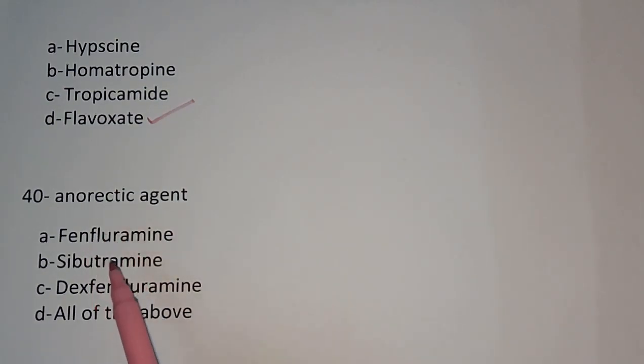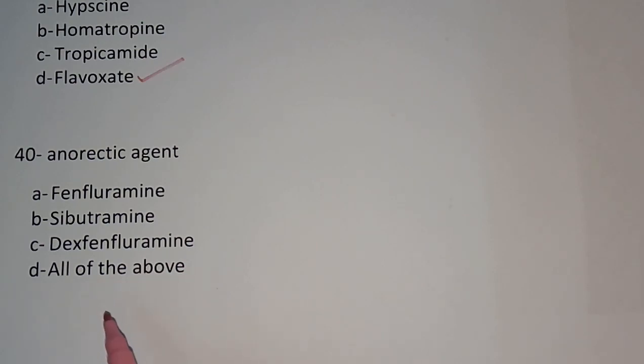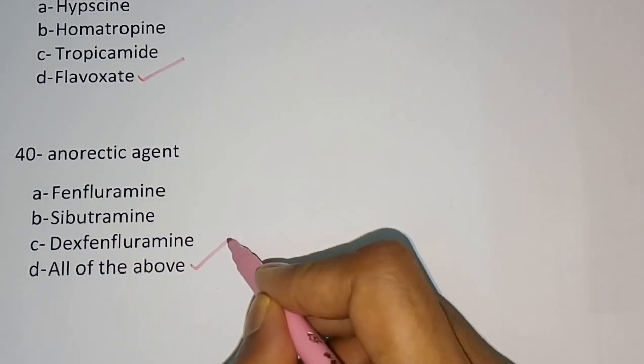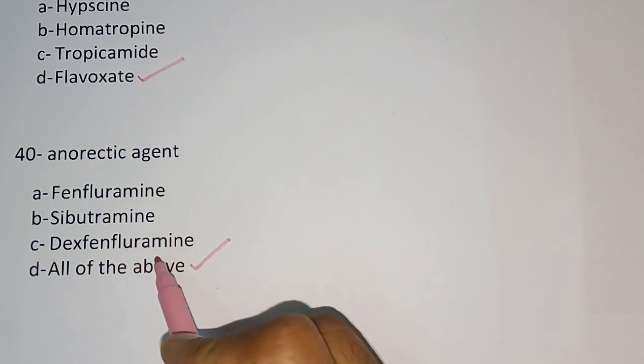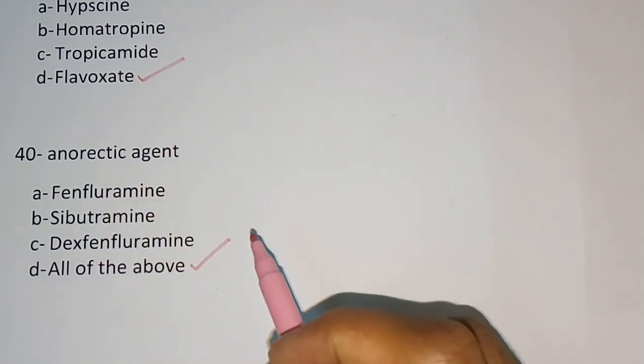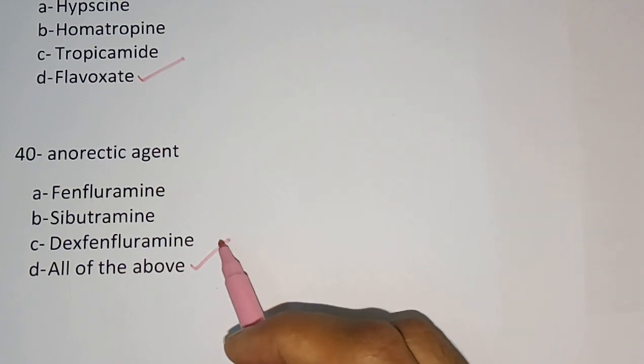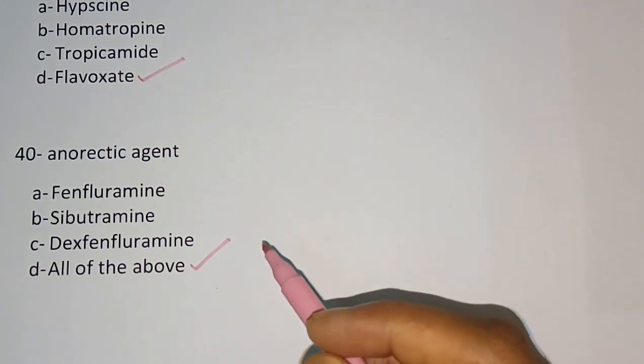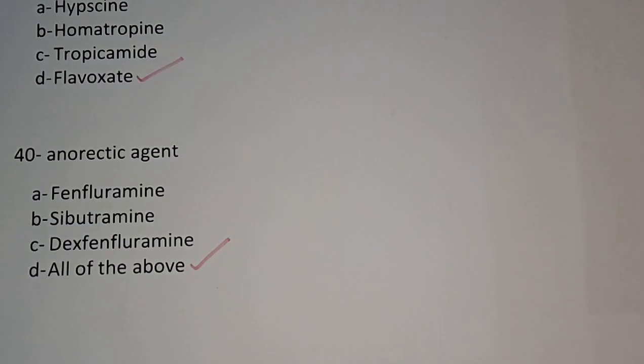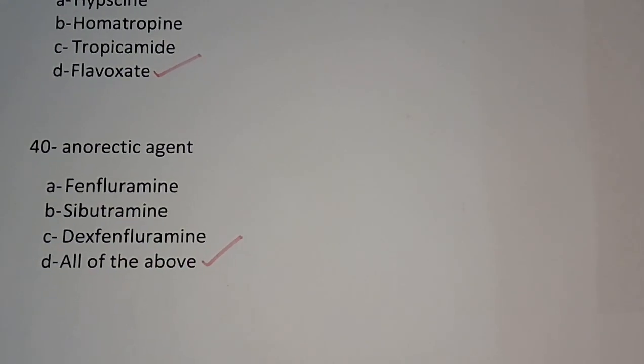Question number 40: Anorectic agents — Fenfluramine, Sibutramine, Dexfenfluramine, All of the above. The correct answer is: All of the above — Fenfluramine, Sibutramine, and Dexfenfluramine are anorectic agents used for weight reduction. Thank you for watching this video. Please share with your friends and subscribe to this channel.